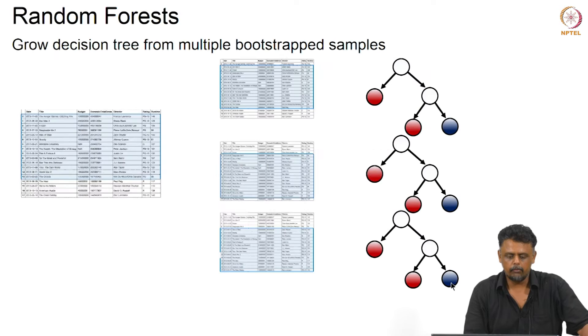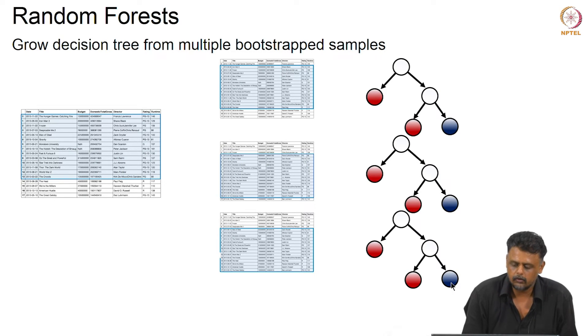In order to deal with this problem, we do something called random forests. As the name implies, it is again a bunch of decision trees, but there is a difference compared to bagging.